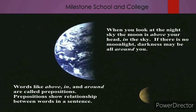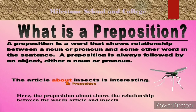By applying words like 'above,' 'in,' and 'around,' we can link one part of a sentence with another part. A preposition can establish the relationship between other words. So the first point is: what is a preposition? A preposition is a word that shows relationship between a noun or pronoun and some other word in the sentence.